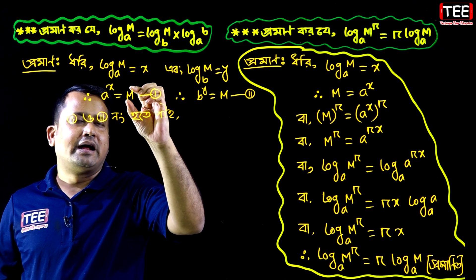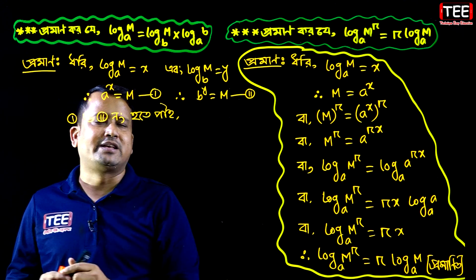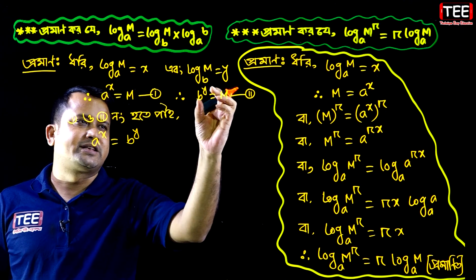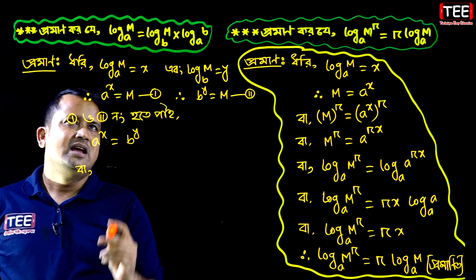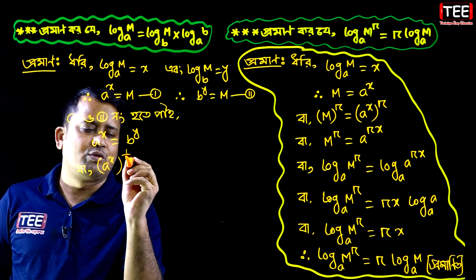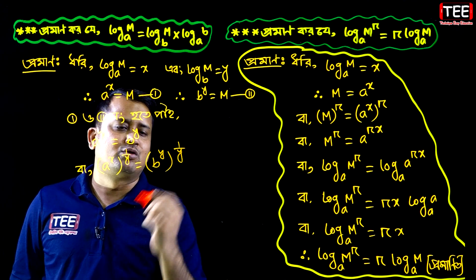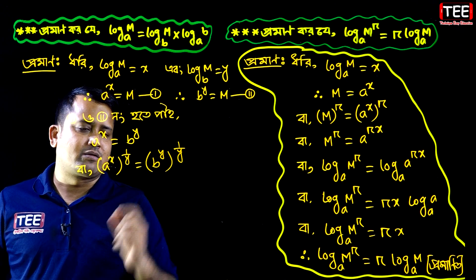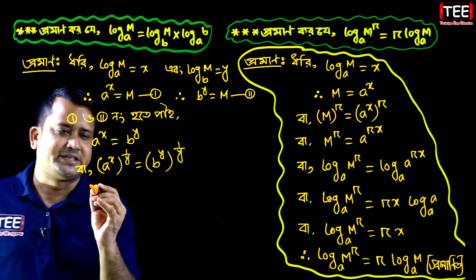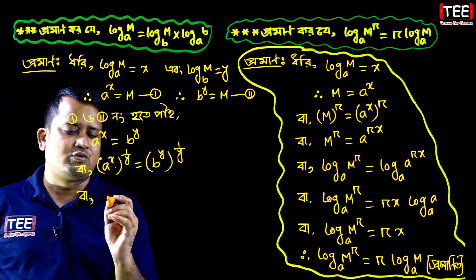On the same side, raising to the power one-by-y: m to the power one-by-y. Then b to the power y into one-by-y, so one-by-y power applied gives us b to the power one. Taking one-by-y power on both sides.